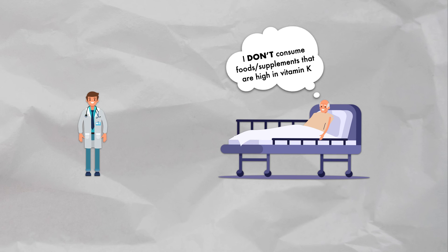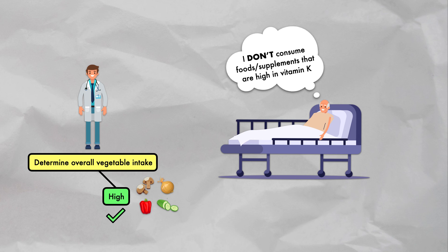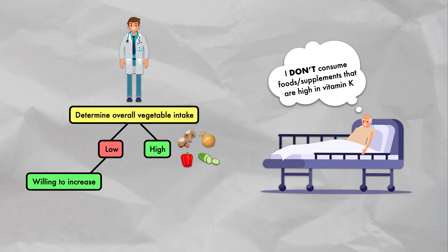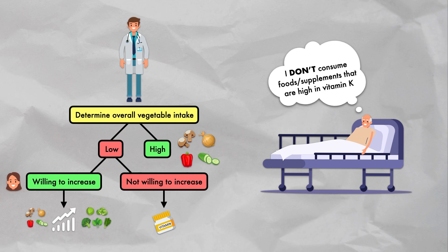If the patient doesn't eat many foods or take supplements high in vitamin K, I try to determine their total vegetable intake to assess the adequacy of their diet. Patients with high total vegetable intake from foods like mushrooms, onion, bell pepper, and cucumber are typically encouraged to continue. Patients with low total vegetable intake who are willing to increase should be encouraged to do so, including a gradual increase in vitamin K food sources, as long as the doctor and dietitian are aware of the changes. Those unwilling to increase can be recommended a daily multivitamin, which may help close some micronutrient gaps.